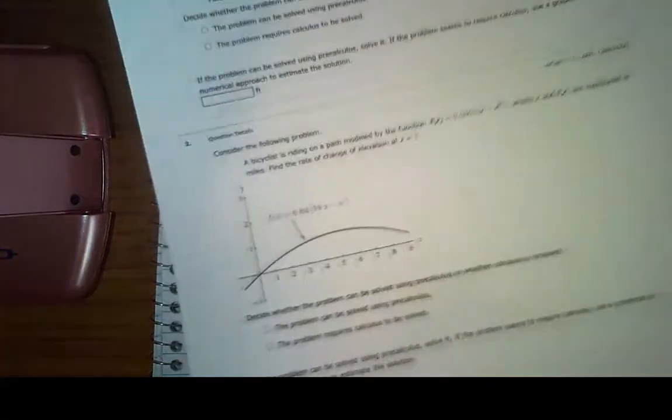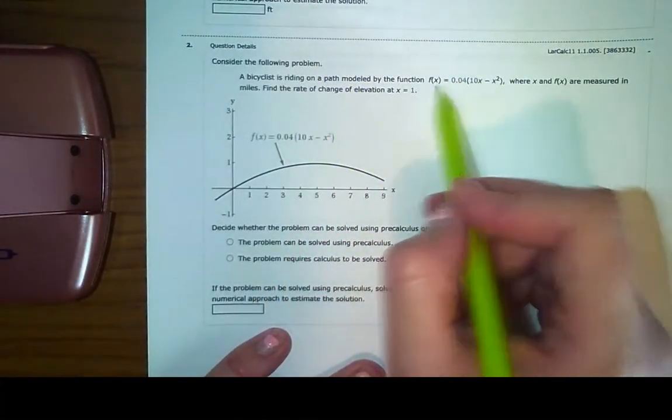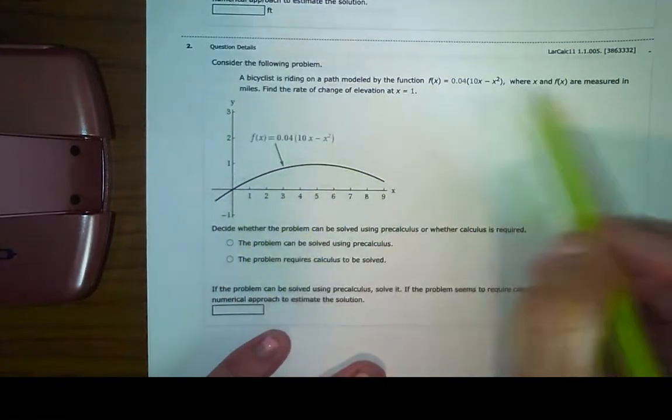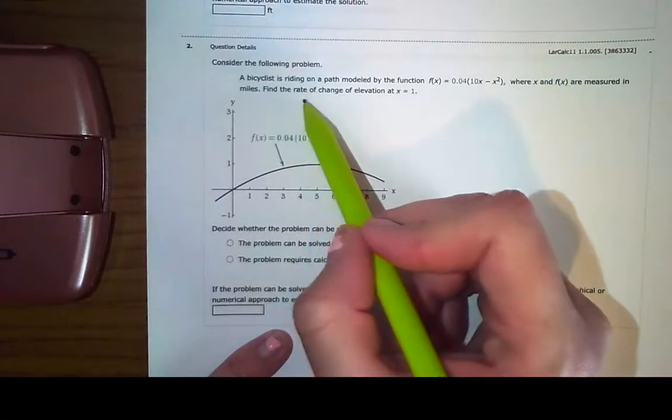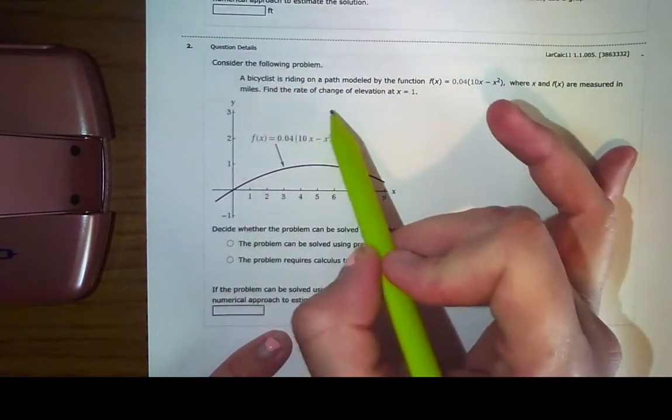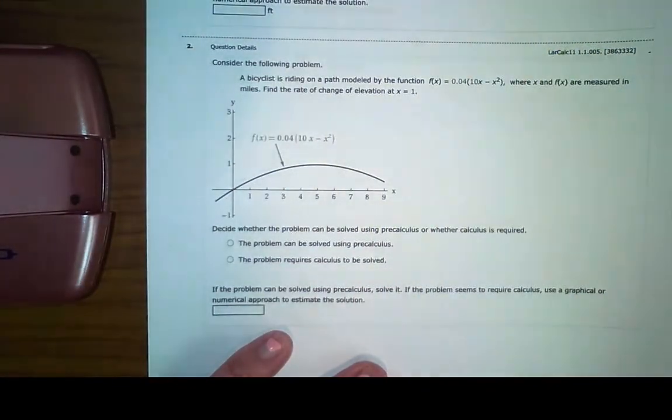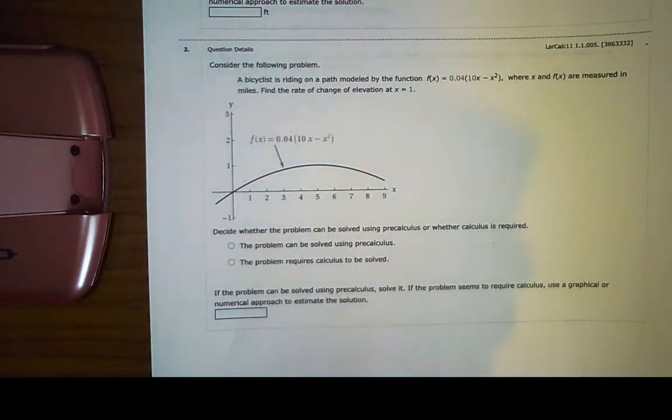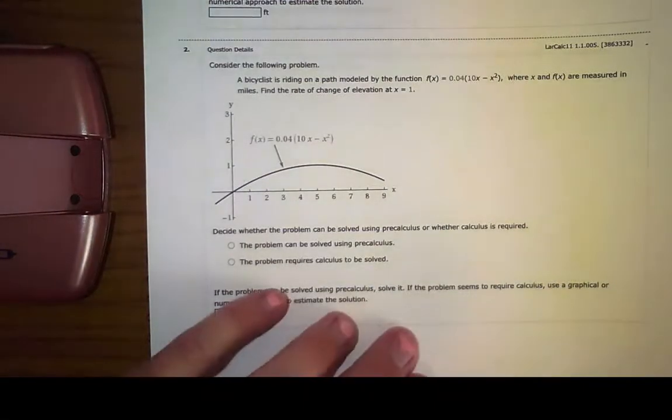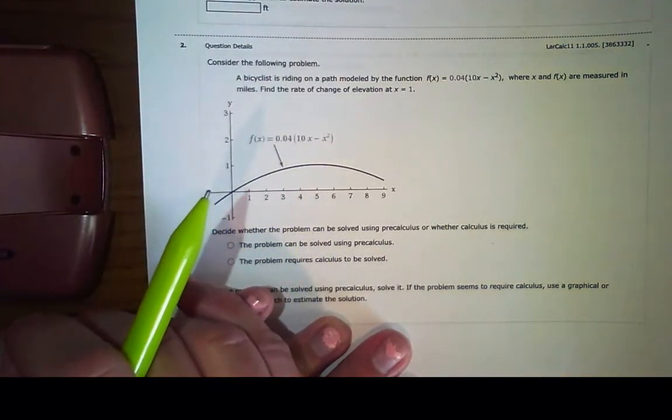So did we use calculus? No. This is an algebra concept that we learned back in middle school, probably. So your answer is I can use pre-calculus, and the answer is 528 feet. So look at number two. A bicyclist is riding on a path modeled by this function right here, which is this graph, where x and f of x are both measured in miles. Find the rate of change or find the slope of elevation at a singular moment in time. And I'm turning off my cell phone.